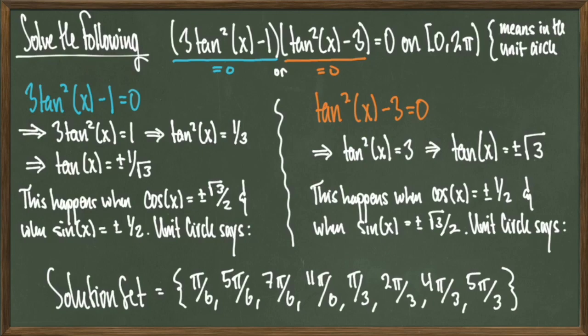To recap: the left-hand side was a product of two different quantities. We take each of those quantities, set them equal to 0, and solve for x individually. Then we collect the solutions from both equations, giving us our full solution set. It's often a good strategy to get an equation as a product of two things on one side and 0 on the other, because breaking things up into smaller equations makes the problem easier to handle.